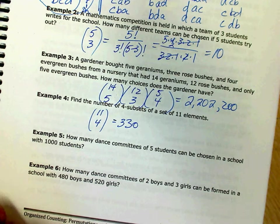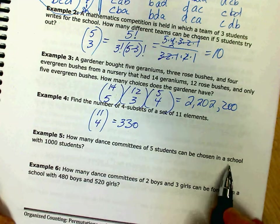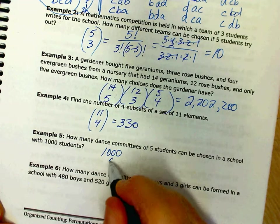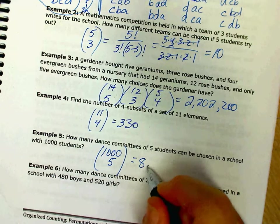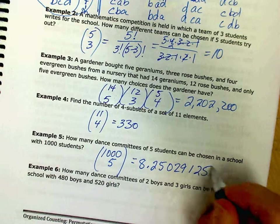How many dance committees of five students can be chosen in a school with 1,000 students? Well, 1,000 choose five, and that equals 8.25029125 times 10 to the 12.